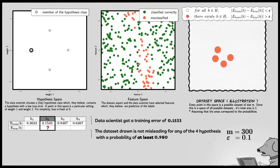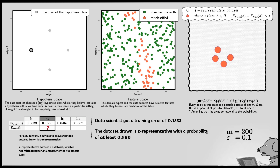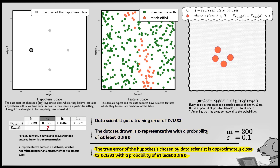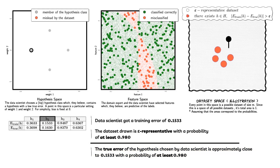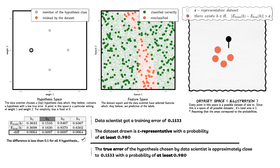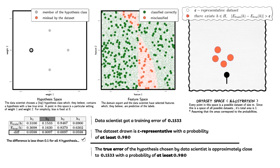Therefore, the data set which the data scientist has drawn is not misleading for any of the four hypotheses with a probability of at least 0.980. A data set which is not misleading for any of the hypotheses in the class is called an epsilon-representative data set. Epsilon-representative data sets are colored white in the data set space. Using these two statements, the data scientist concludes: the true error of the chosen hypothesis is approximately close to 0.1533 with a probability of at least 0.980. This is a great guarantee — the data scientist can now breathe a sigh of relief. Since this is a simulation, we know the data set drawn is indeed epsilon-representative, which was expected.